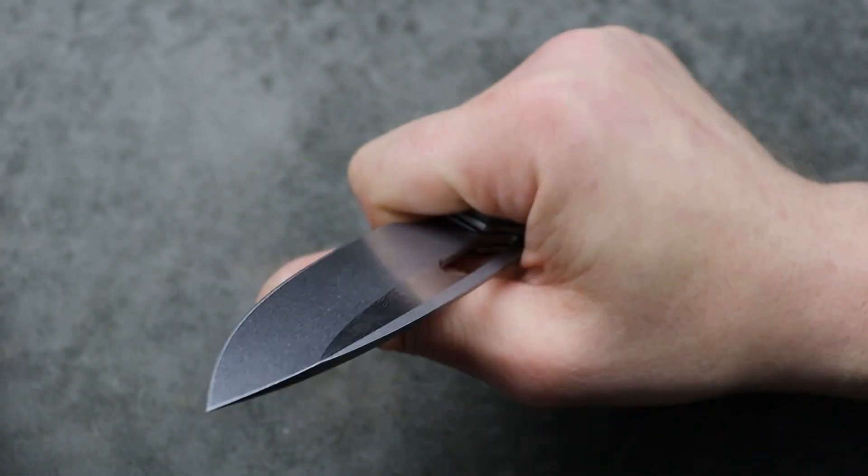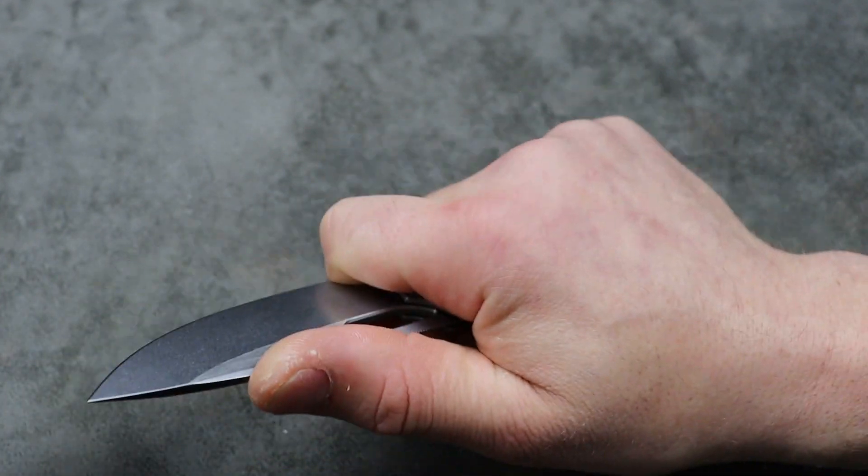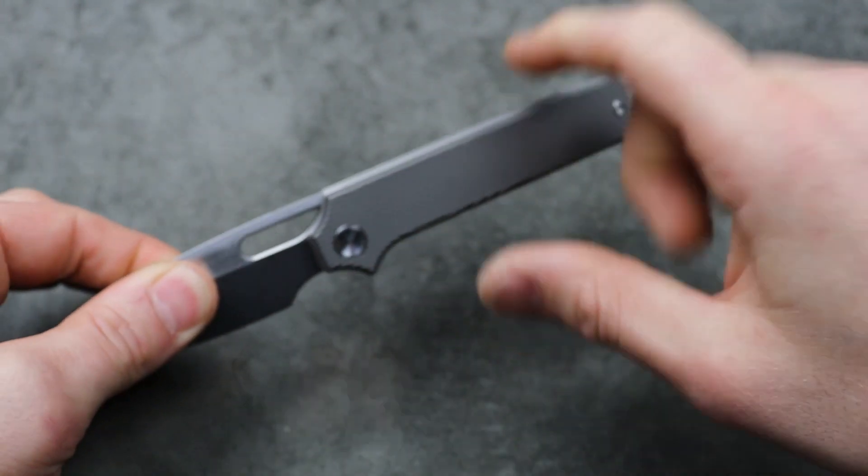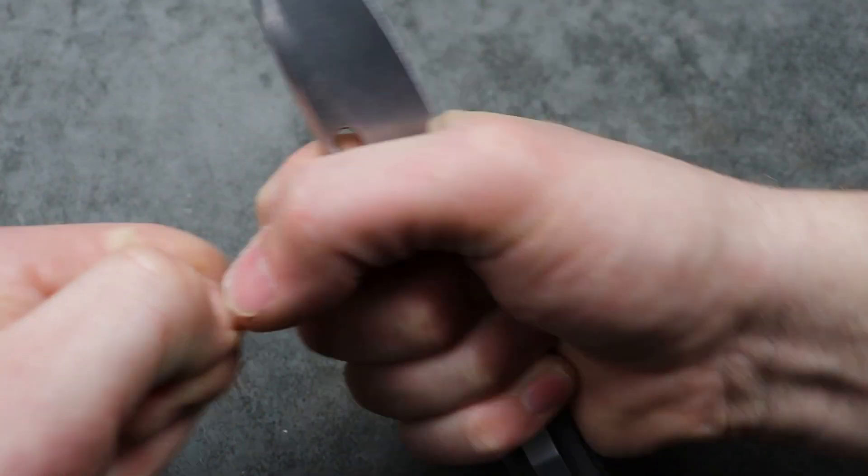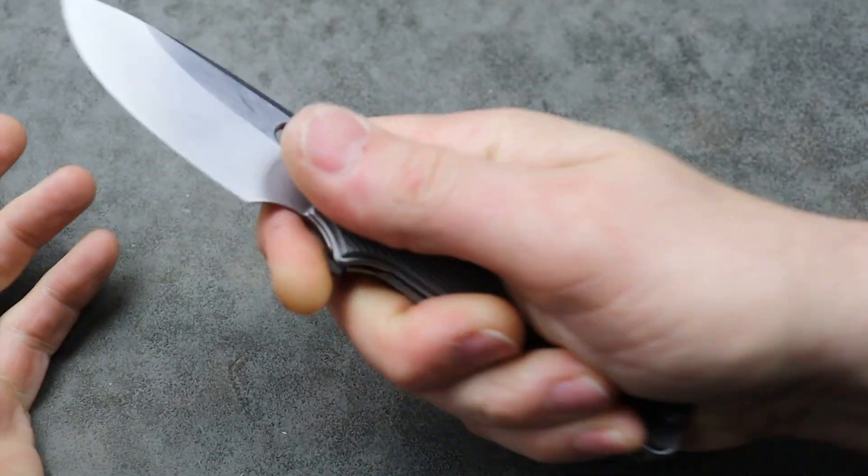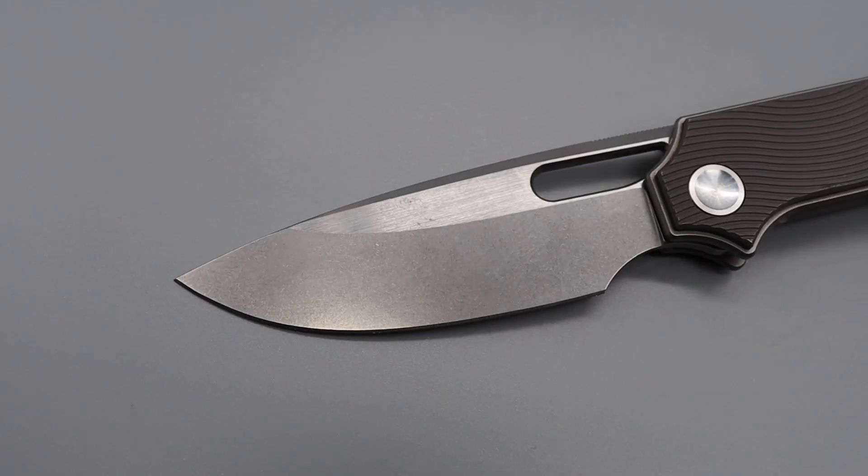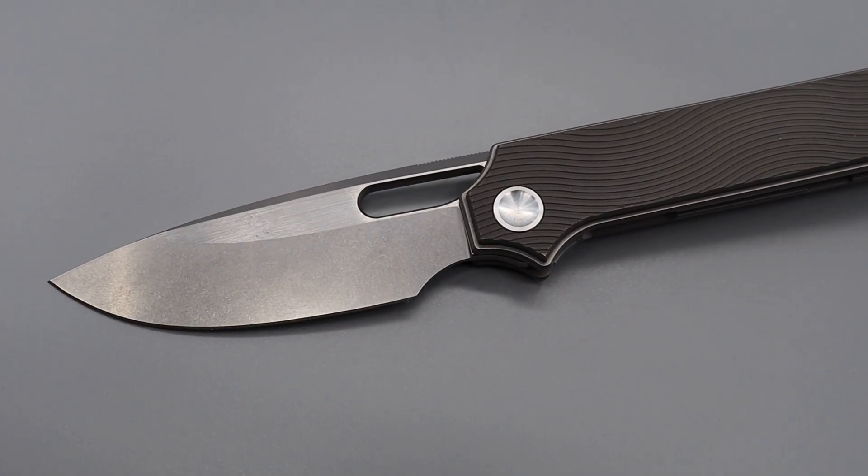The ergos, like I was saying, being able to get up nice and tight to that edge, you're going to be able to do heavy push cuts. Then because of the straight back, you're going to be able to do good rope cutting and pull cuts. That's awesome. Pinch grips, with the finger choil again, it's going to be really good. So lots of great things about this.